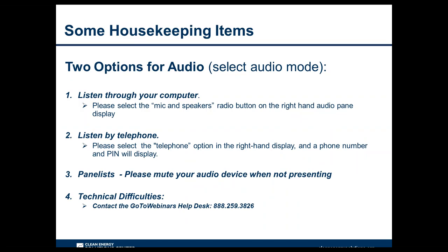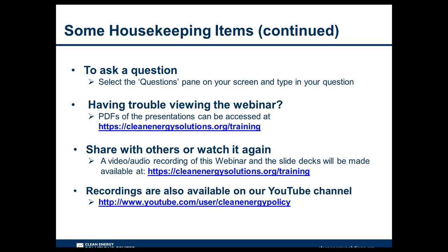Before we begin, I'll go over some of the webinar's features. For audio, there are two options: you can either listen through your computer or over the phone. If you listen through the computer, please select the mic and speakers option in the audio pane, and if you choose to dial in by phone, please select the telephone option and a box on the right-hand side will display the phone number. If anyone's having technical difficulties, you can connect to the GoToWebinars Helpdesk at 888-259-3826 for assistance.